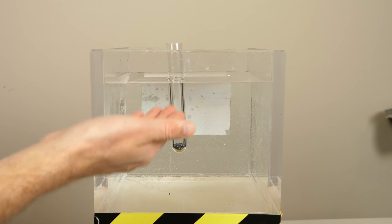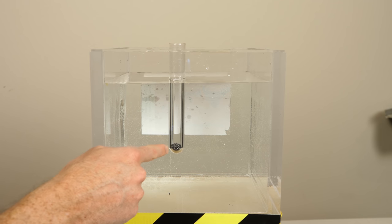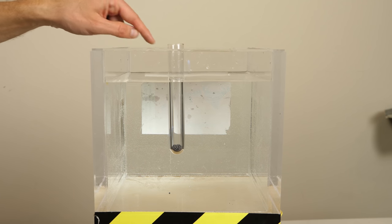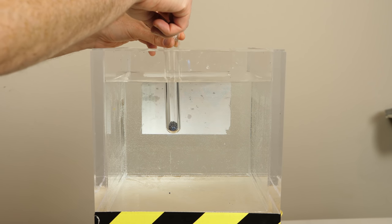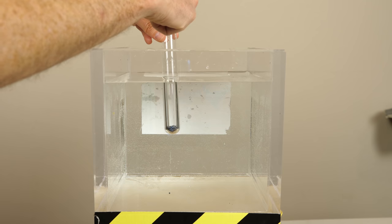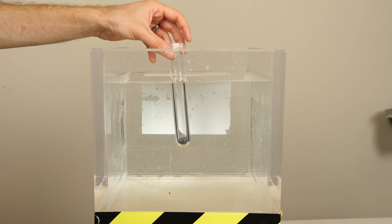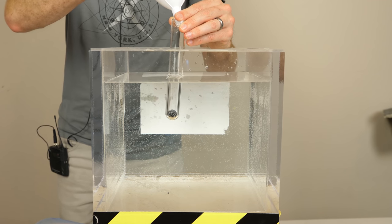But what happens if we raise that center of mass? So instead of dropping weights at the bottom, let me add some weights to the top and watch what happens. So now I've gone ahead and added a top to this so I can put the lead weights in at the top and they won't fall to the bottom. So now let's see what happens when I add them to the top.